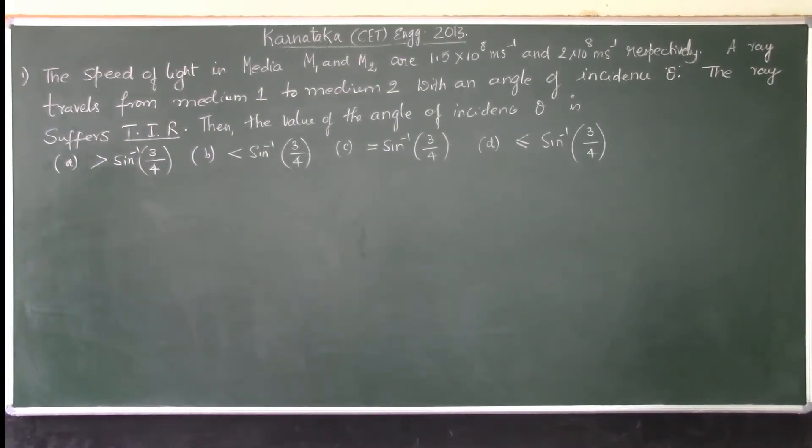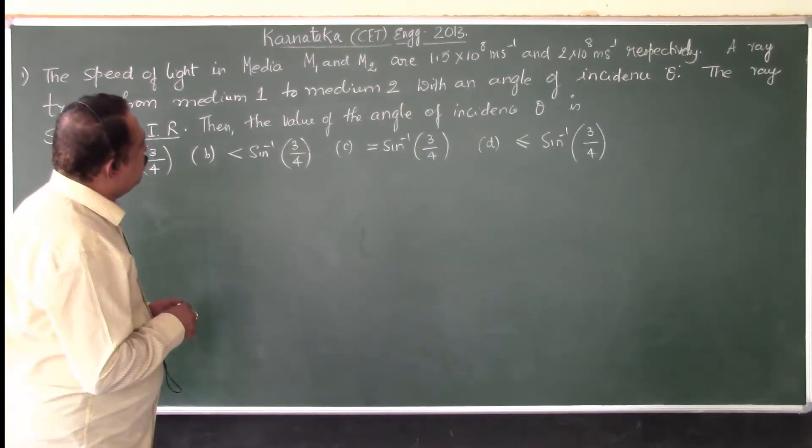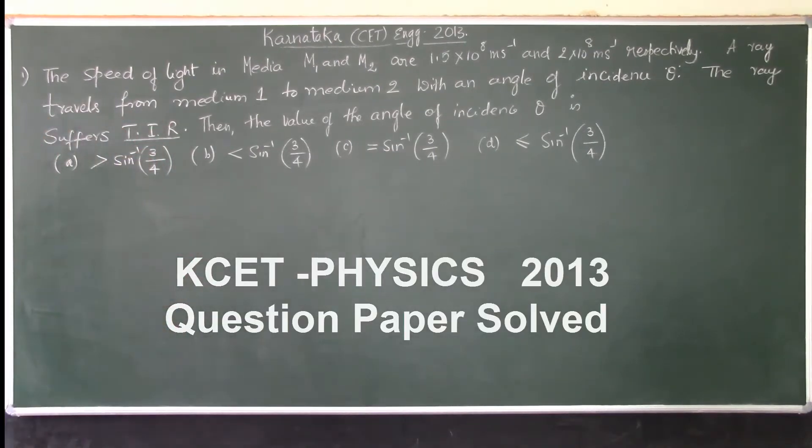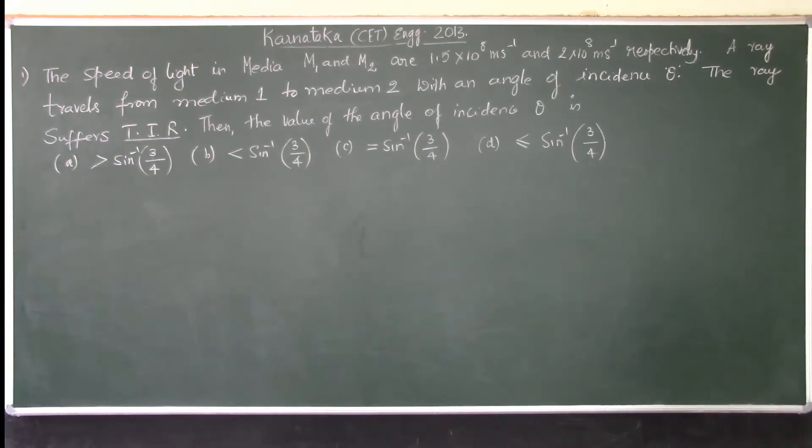Let us have the questions, discussion with explanation for Karnataka CET Engineering examination conducted during the year 2013. Okay, the first problem is the speed of light in media m1 and m2.